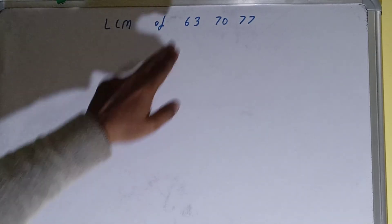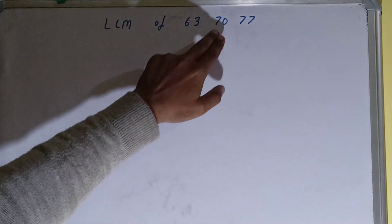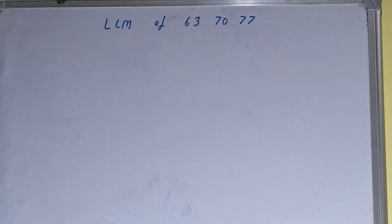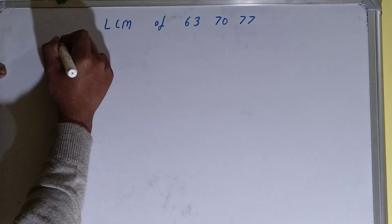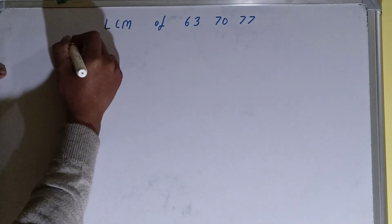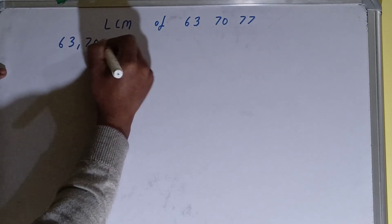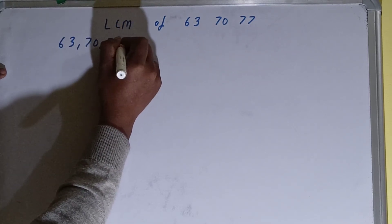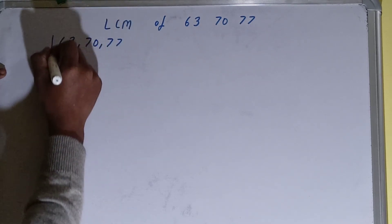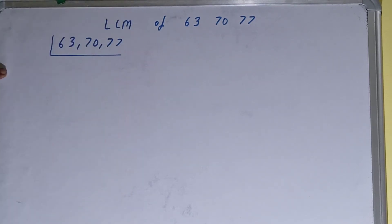Hello friends, in this video I'll be helping you with the LCM of 63, 70, and 77. To find it out, we first need to write all three numbers like this: 63, 70, 77. The next thing we need to do is start with the lowest prime number, that is 2.